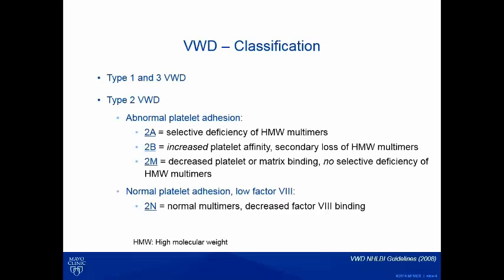Von Willebrand factor is a crucial molecule in primary hemostasis — it's very important to the first step of blood clotting. Deficiency of this molecule causes von Willebrand disease. The prevalence based on literature is about 0.1 to 1 percent. Acquired von Willebrand syndrome can actually be higher; there's no prevalence study, but VWF-related disease is highly prevalent among coagulopathies.